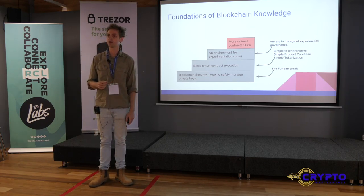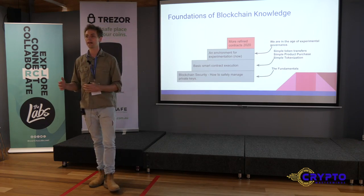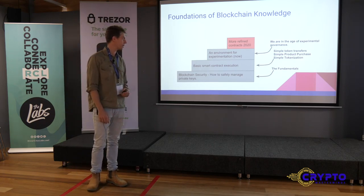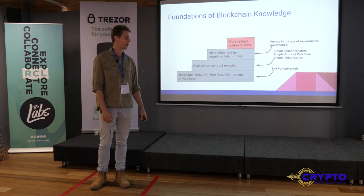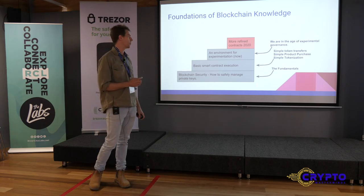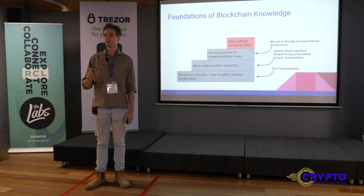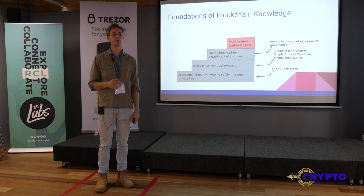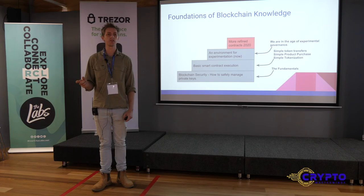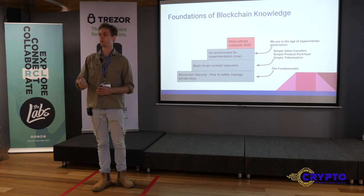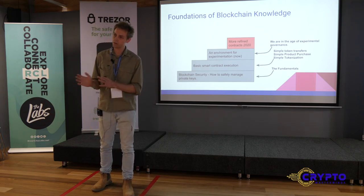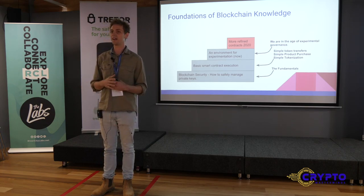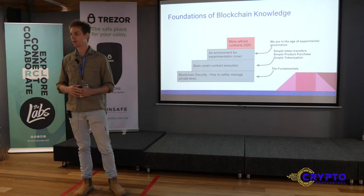Once you've got the foundations of blockchain security out of the way — you're not at risk of phishing or social hacking — you can start experimenting with basic smart contract execution: token transfers, simple product purchases via tokens, and simple tokenization of assets. What I see happening next is creating an environment where we can all experiment with governance. Programmers don't have all the solutions — we follow through on what people want. We're in the age of rapid, experimental governance right now.